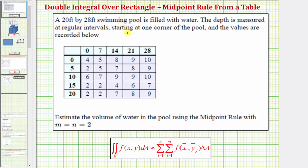A 20 foot by 28 foot swimming pool is filled with water. The depth is measured at regular intervals, starting at one corner of the pool, and the values are recorded below. Looking at the table, notice how the pool is 28 feet in one direction and 20 feet in the other direction, and these values represent the depth of the water at the given location.